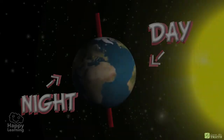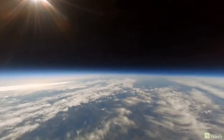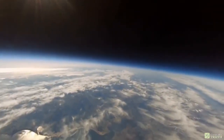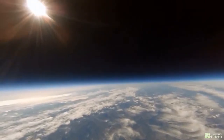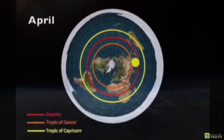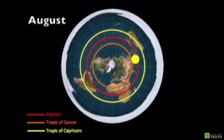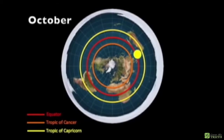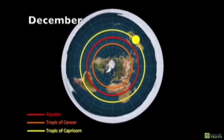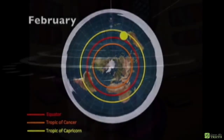On the flat earth model, however, the sun is much closer to the earth than claimed by modern science, acting more like a local spotlight overhead as it revolves around the central pole in 24-hour cycles, illuminating the areas beneath it, then disappearing beyond the scope of the observer's perspective as it moves farther away, creating the illusion of sunrise and sunset.